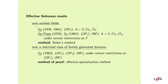Effective finiteness results. Effective finiteness results over number fields for discriminant form equations were obtained over Z, O_K, and O_S; and in 1978 with Pop for decomposable form equations and norm form equations under certain restrictions on F. Effective specialization methods were used. Effective finiteness results were also obtained with restrictions on the form and the ground domain using effective specialization.